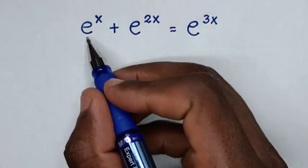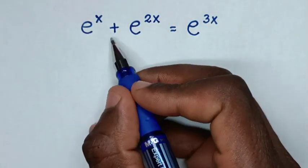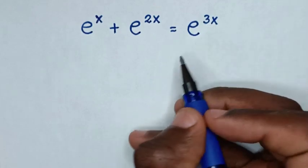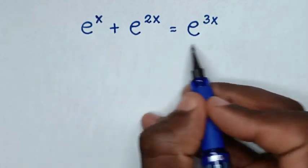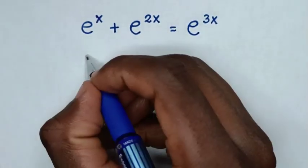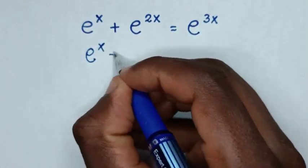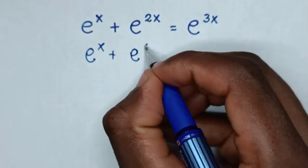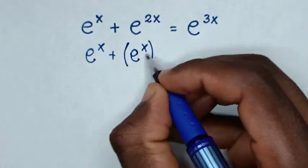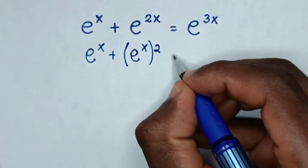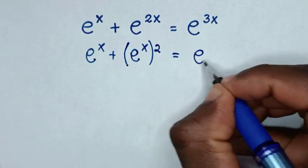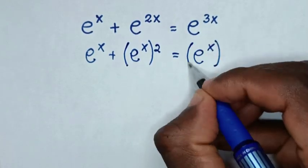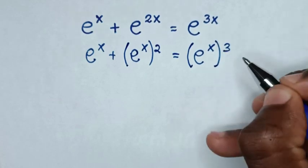Hello! We have the equation e to the power of x plus e to the power of 2x equals e to the power of 3x. To find the value of x, we note that e power of x plus e power of 2x is the same as e power of x in brackets, and e power of 2x is e power of x squared, while e power of 3x is e power of x cubed.